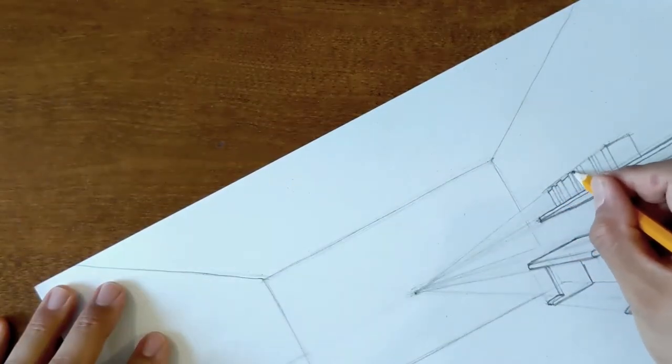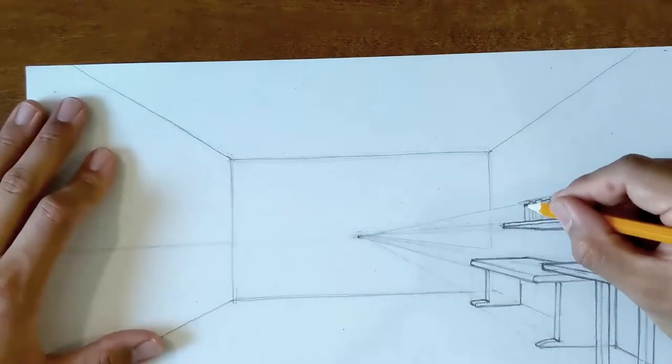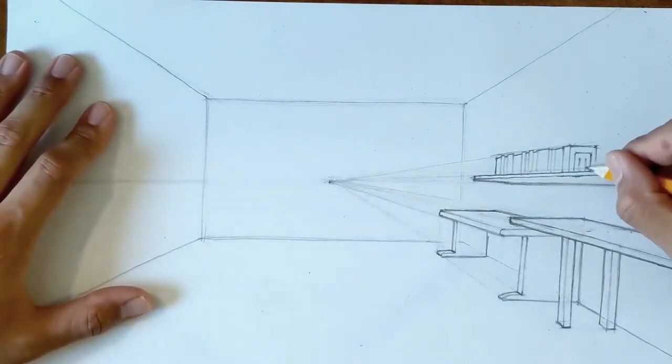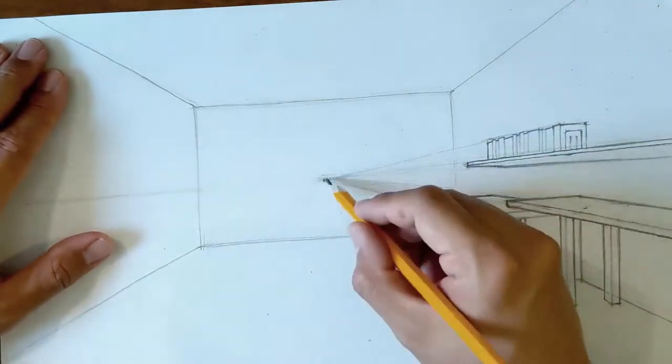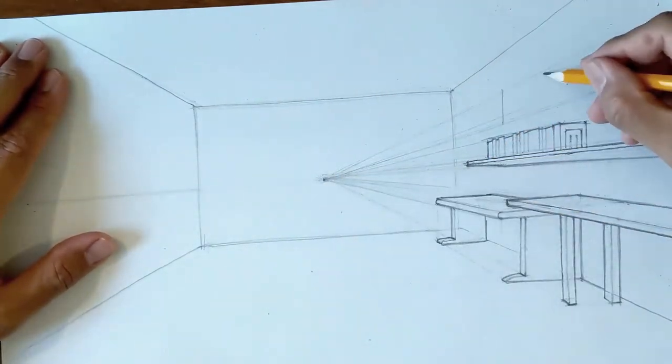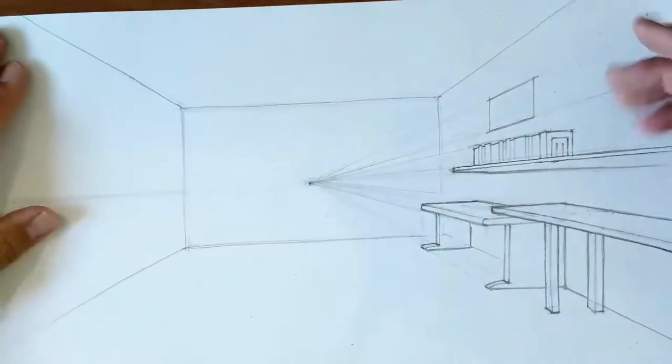Over here I'm putting in some books, books of varying heights. And if you notice, the beginning step of an object like that is always the same. I start with the outbounding box, the outermost box. I get the basic shape of it in and then I add the smaller details later.